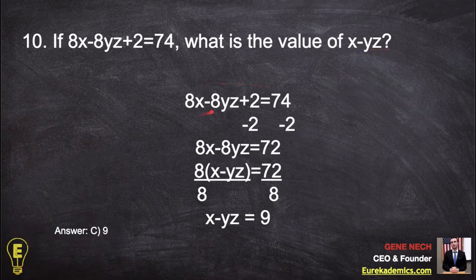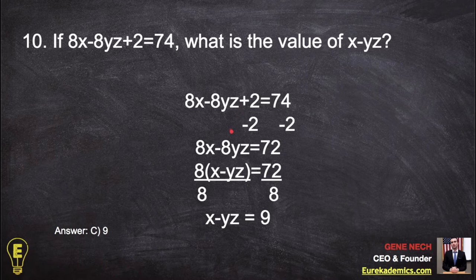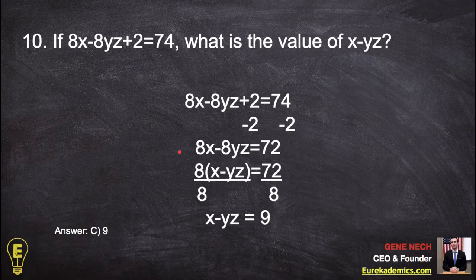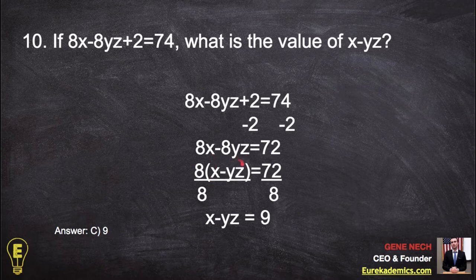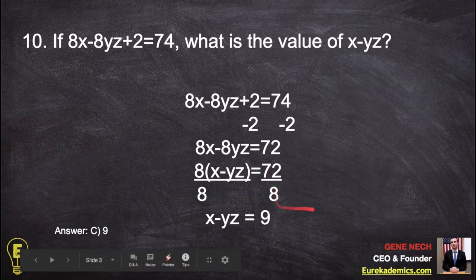So the first step would be to get rid of this two using algebra, negative two. Then we would factor out an eight, which means take it out, and it's the opposite of distribution if you're curious. So then we have 8 times x minus yz still equals 72. Now divide by eight to get rid of that eight, and then we get what we were looking for. X minus yz is nine, so our answer is C.